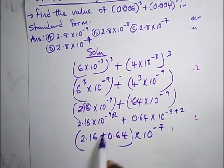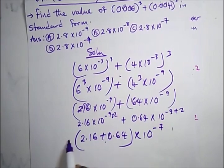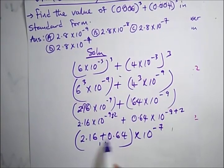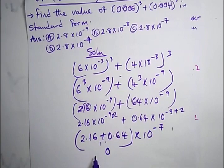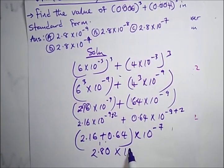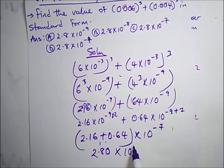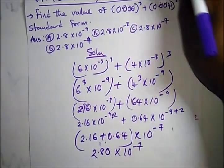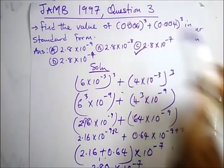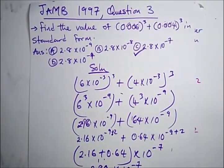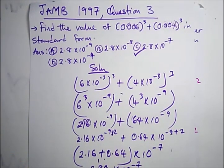Adding 2.16 + 0.64: 6+4=10 carry 1, 6+1=7, plus 1 gives 8. So we get 2.80 × 10⁻⁷. The answer is option C. Thank you for staying tuned to today's class — see you in our next video tutorial. Thank you, bye!